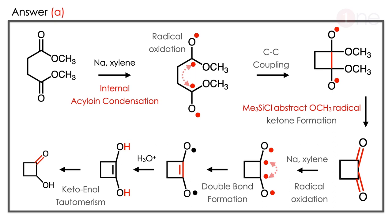The answer is A. Let us see how. This is the acyloin condensation occurring internally. Because you have an ester, you are using sodium and xylene — so a kind of radical reduction occurs. The diradical is formed, the radicals bond and a C-C linkage forms, giving the 4-membered cyclic ring. Here you use trimethylsilyl chloride, which is very important because it abstracts the methoxy group. So the bond formation between C and O happens and a C=O double bond forms on both ends. Using sodium and xylene again forms the diradical, and then the C=C double bond forms inside the ring. Then you use water and both radicals become hydroxyl groups. The OH attached to the double bond leads to keto-enol tautomerism, giving the defined product.